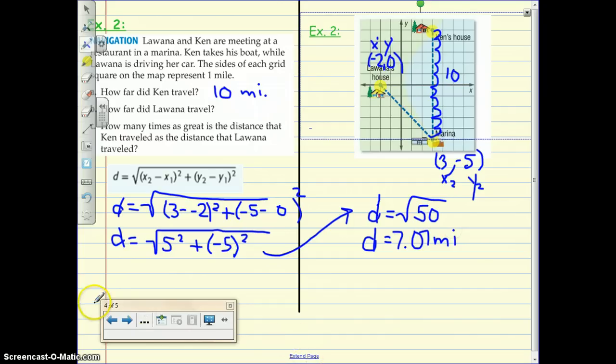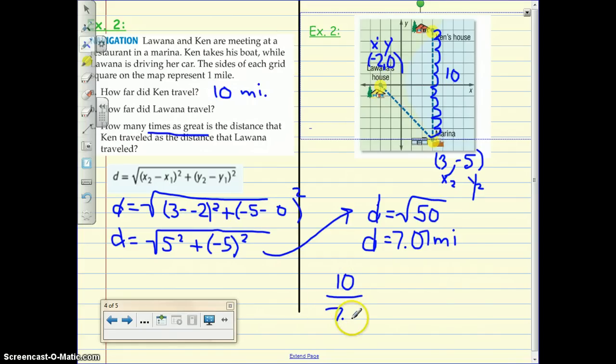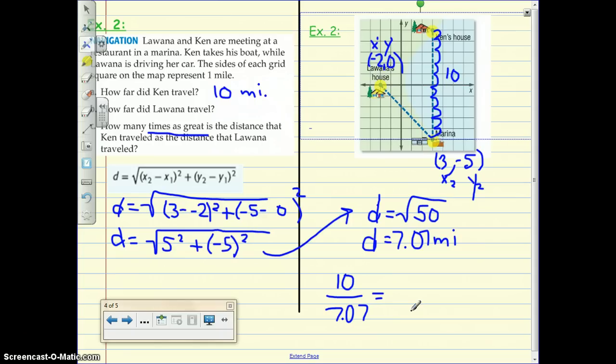All right, and our last question is how many times as great is the distance that Ken traveled as the distance that Lawana traveled? So I'm going to put Ken's distance and divide it by Lawana's, and get my final answer, which is 1.41 times as great.